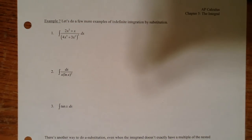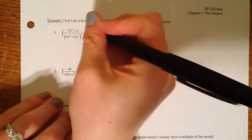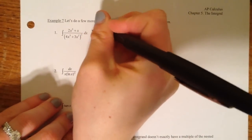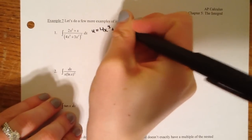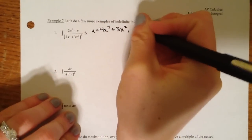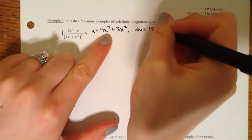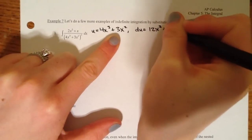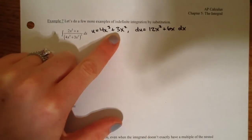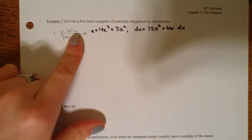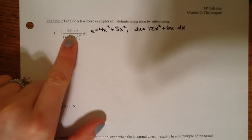So a few more examples. We're looking for something that looks like it's nested. If you look at this one, the denominator definitely looks like it's a nested function. So let's start to write this out. u equals 4x³ + 3x². To take the derivative, we write du equals 12x² + 6x dx. This is not exactly what we see right here, but we do see 6 times that value.